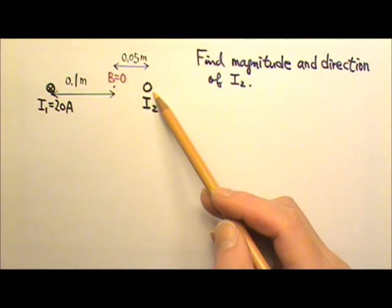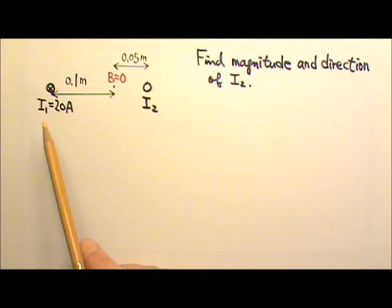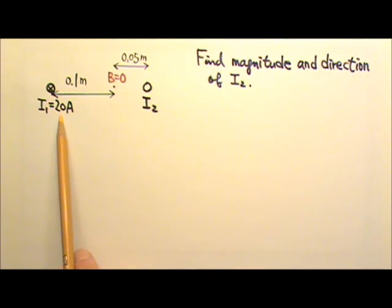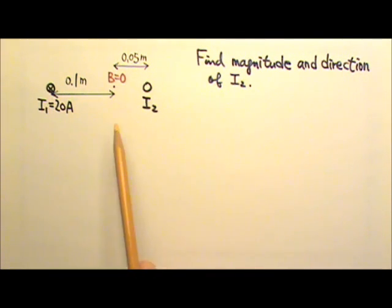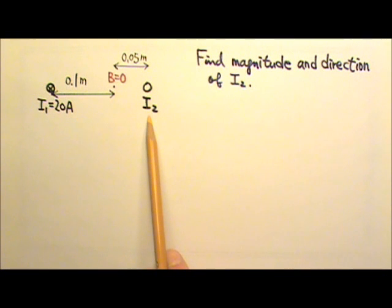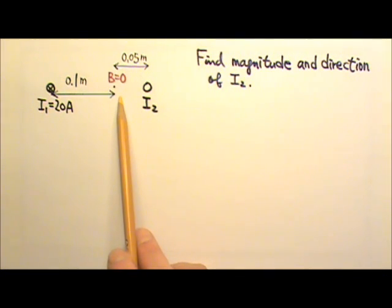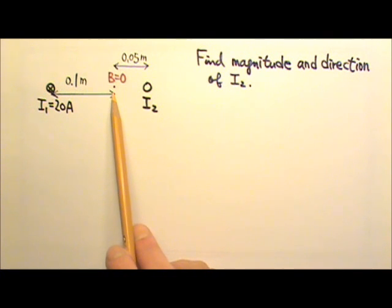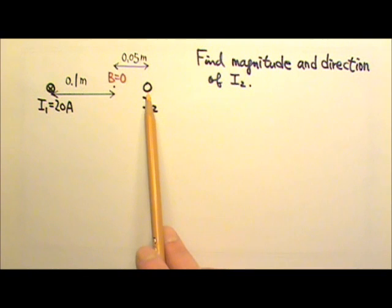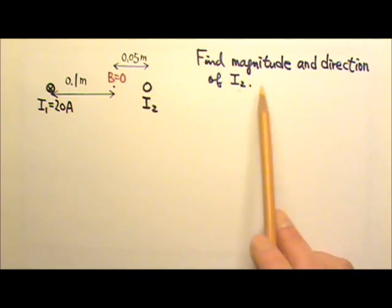Two long straight wires are perpendicular to the page. The current in one wire is 20A into the page. The current in the other wire is I2. The net magnetic field by the two currents is 0 here in between the two wires, 0.1 meters from the 20A wire and 0.05 meters from the other wire. Find the magnitude and direction of I2.